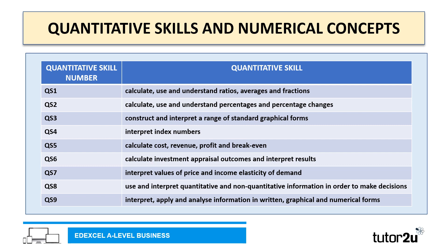Quantitative skill 5: calculate cost, revenue, profit and breakeven. Quantitative skill 6: calculating investment appraisal outcomes and interpreting their results. Quantitative skill 7: interpreting values of price and income elasticity of demand. Quantitative skill 8: use and interpret quantitative and non-quantitative information in order to make decisions.